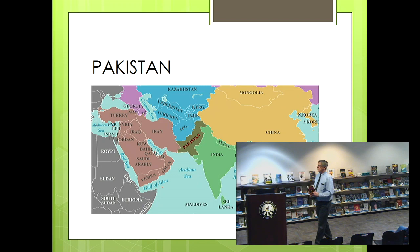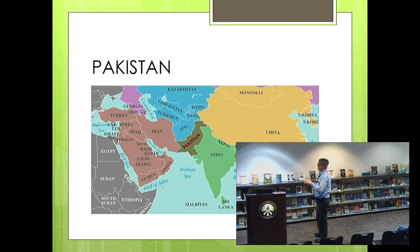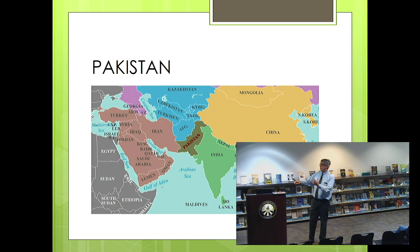To get into the history, first you need to understand where Pakistan is. On the map, you can see it's located to the west of India. At one time, this was part of a British colonial effort that combined all of these territories together. It fits right in between Western Asia and Eastern Asia, kind of at the crossroads.